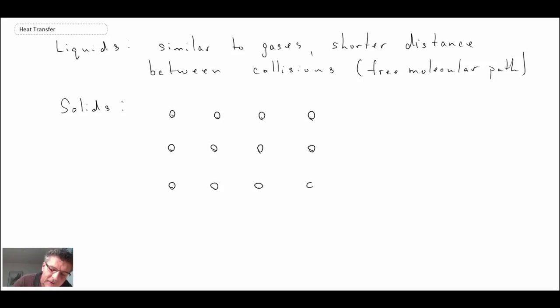We can have different types of lattices like face-centered cubic or body-centered cubic. Typically, when we're dealing with solids, there are two forms of interchange of energy: lattice vibration and electron motion.